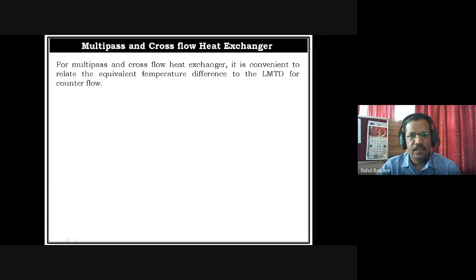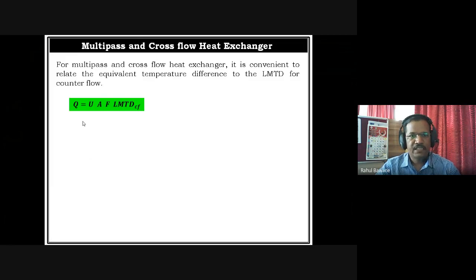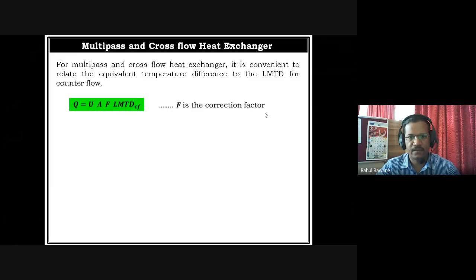For multi-pass and cross flow heat exchangers, it is convenient to relate the equivalent temperature difference to the LMTD for counter flow. Whenever we analytically solve a numerical for this kind of heat exchanger, we always consider LMTD for counter flow, never for parallel flow. The mathematical expression is Q equals U times surface area times F times LMTD for counter flow, where F stands for correction factor, because this is not an exact counter flow heat exchanger but we are taking LMTD for counter flow, so somewhere we need a correction factor.